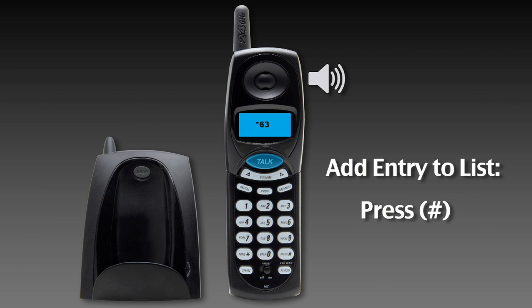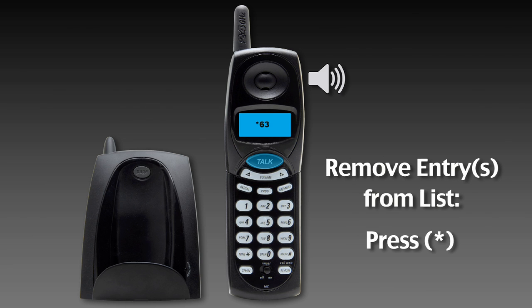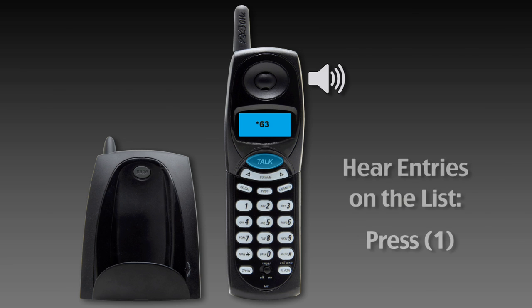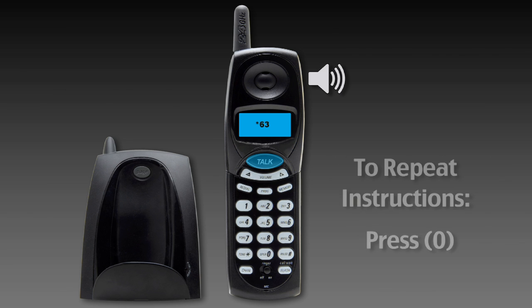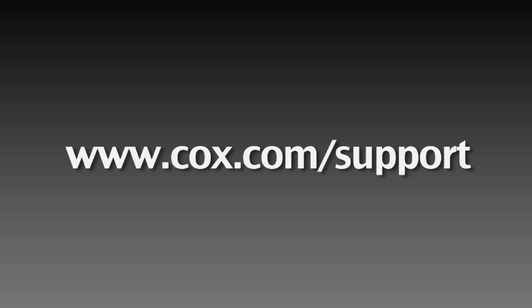To add an entry, press the number sign key. To remove one or more entries, press the star key. To hear the entries on your list, dial 1. To hear these instructions repeated, dial 0. For more information, visit cox.com/support.